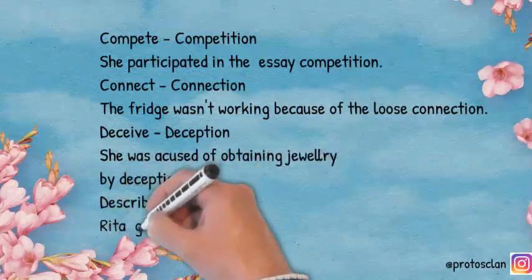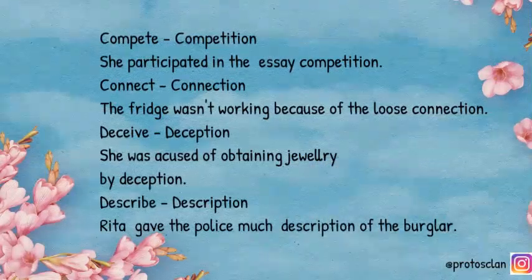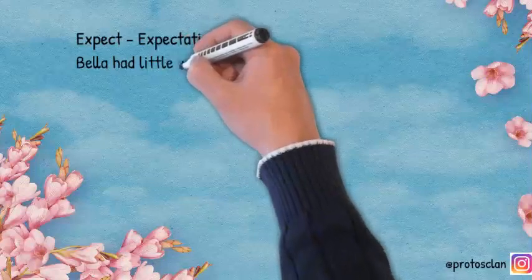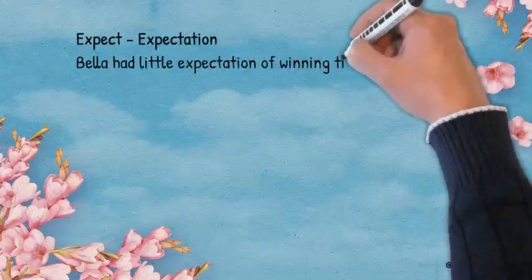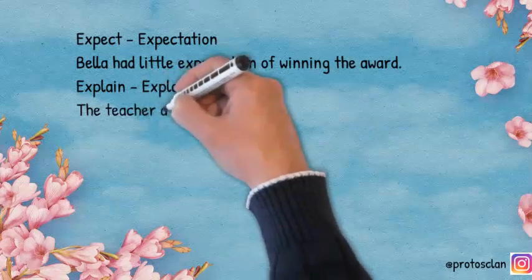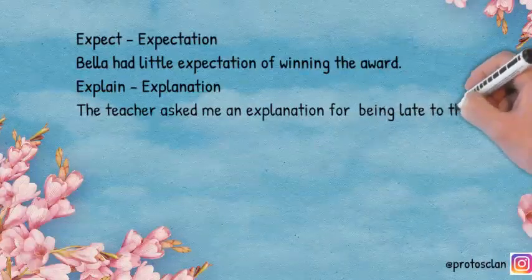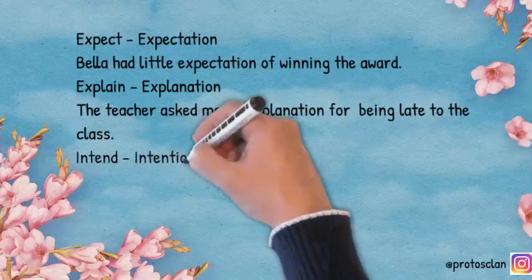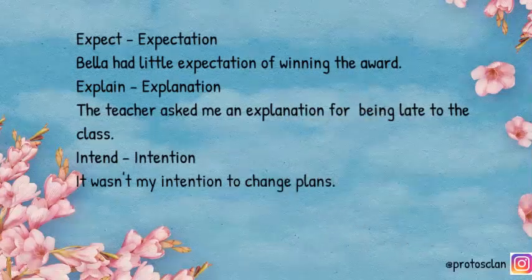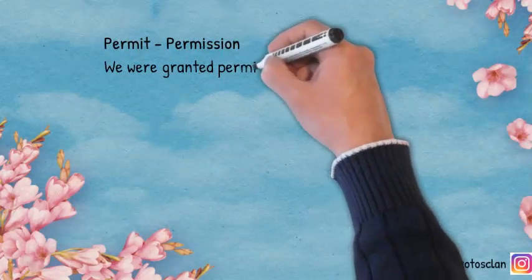Describe — Description: Rita gave the police a detailed description of the burglar. Expect — Expectation: Bella had little expectation of winning the award. Explain — Explanation: The teacher asked me for an explanation for being late to class. Intend — Intention: It wasn't my intention to change plans. Permit — Permission: We were granted permission to visit the palace.